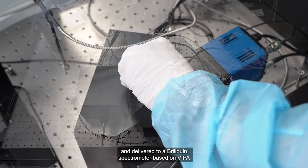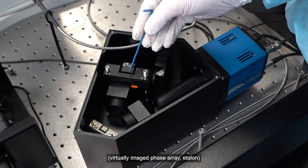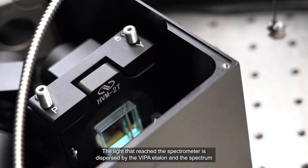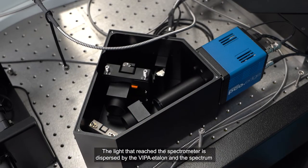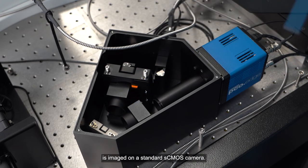Virtually imaged phase array etalon. The light that reaches the spectrometer is dispersed by the VIPA etalon, and the spectrum is imaged on a standard sCMOS camera.